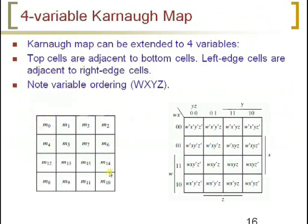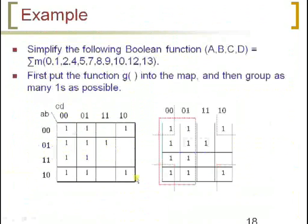A rectangle of 16 cells produces a function equal to logic 1. If you group all 16 cells, the resultant expression would be 1. Now, simplify the following Boolean function. These are all the min terms of this particular function. First, we have to put all these min terms on the K-map, so I have plotted all those min terms on the K-map.